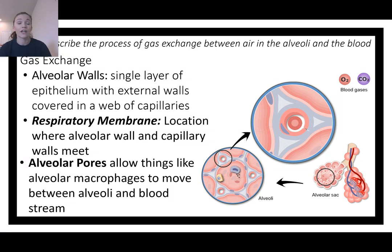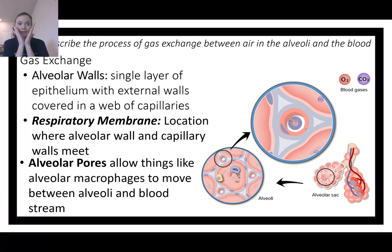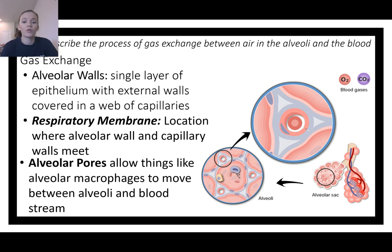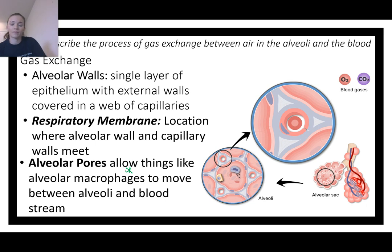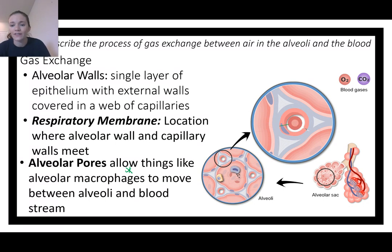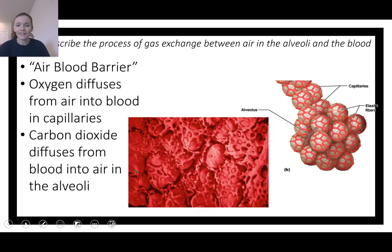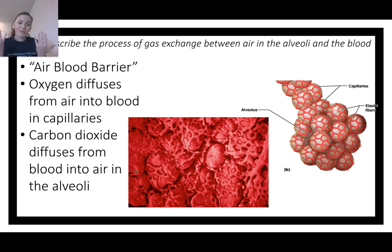Alveolar walls are a single layer of epithelium — about half a micrometer — and are covered in capillaries. The respiratory membrane is where the alveoli wall meets the capillary wall — the walls that gases are diffusing through. There are also alveolar pores that let macrophages and white blood cells into the alveoli to fight infections. The respiratory membrane is also called the air-blood barrier: oxygen from inhaled air diffuses into red blood cells, and CO2 waste diffuses out to be exhaled.